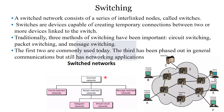We have a general classification: switched networks are classified into three types — circuit switched, packet switched, and message switched. The packet switched type is further divided into two: datagram network and virtual circuit network.